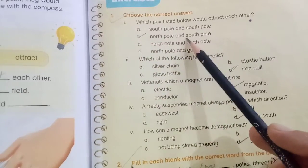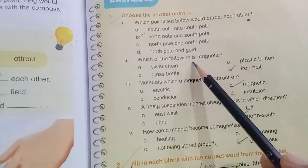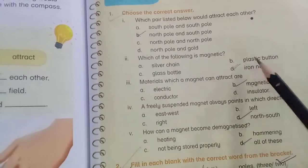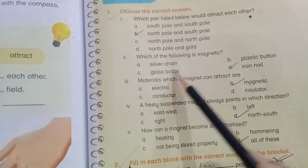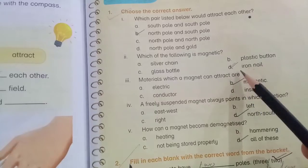Which of the following is magnetic: silver chain, plastic button, glass bottle, iron nail? And D is the correct answer: iron nail.